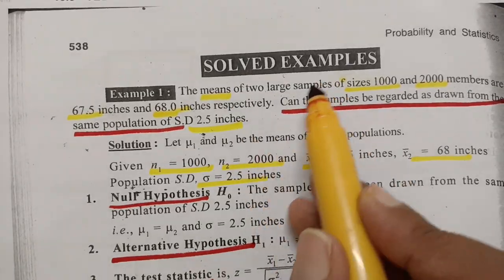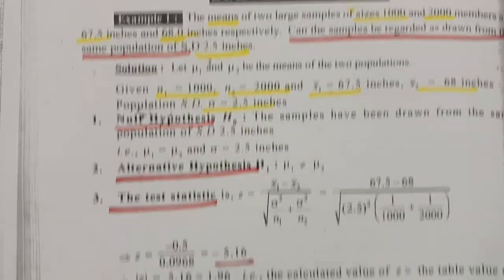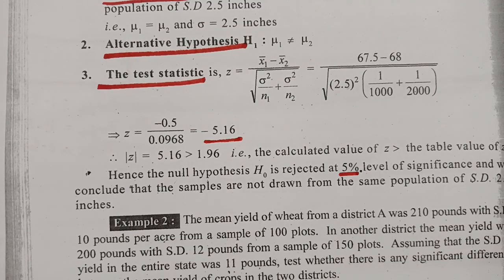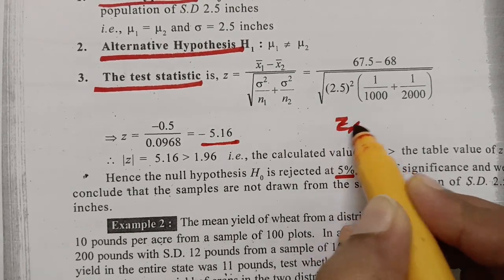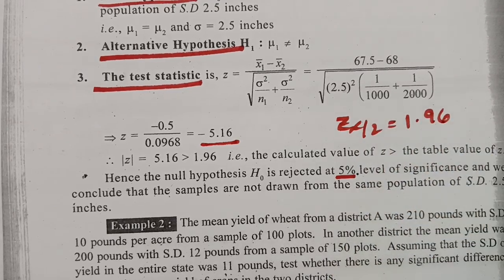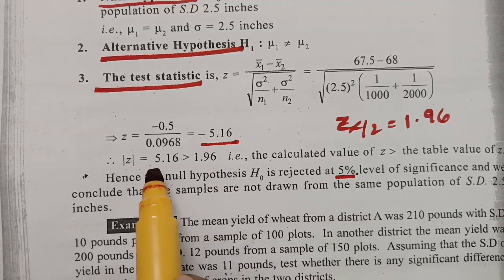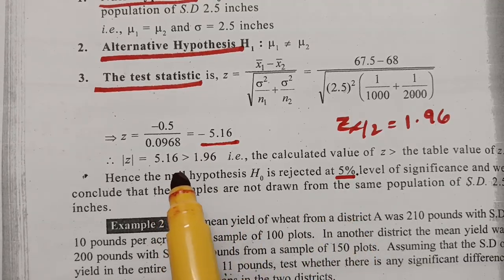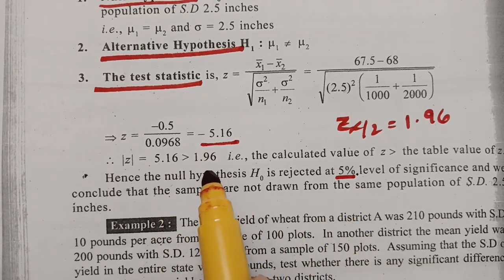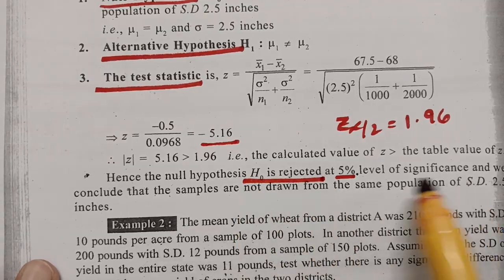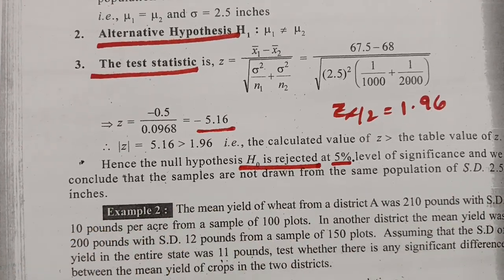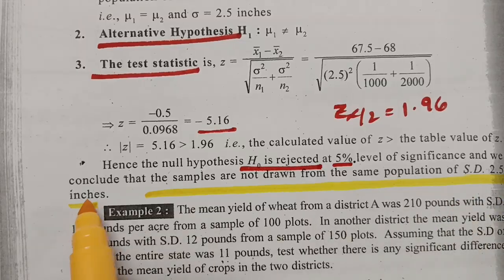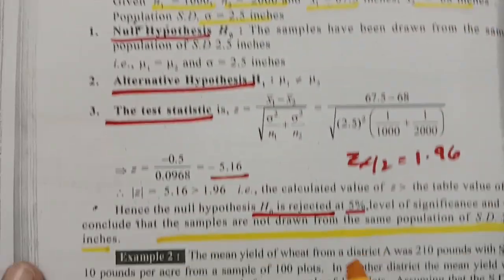Since the level of significance is not mentioned in the problem, we take 5% level of significance, giving Z alpha by 2 equal to 1.96. Comparing: 5.16 is greater than 1.96, so we reject H0. At 5% level of significance, we conclude that the samples are not drawn from the same population with standard deviation of 2.5 inches.